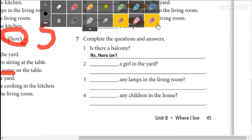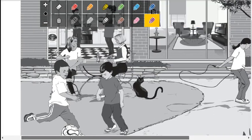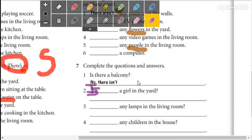A girl, singular, haría la pregunta con is there. Correct. Is there a girl in the yard? Miren aquí en el patio. Sí, no, aquí está. Yes, there is.